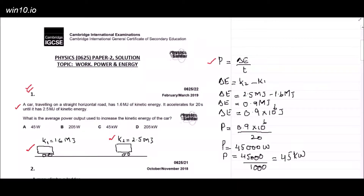Power can be written as: power equals increase in energy divided by time taken. In this case, the increase in energy is K₂ minus K₁. Substituting the numbers: K₂ is 2.5 megajoules minus K₁ that is 1.6 megajoules. When you subtract, we get 0.9 megajoules.